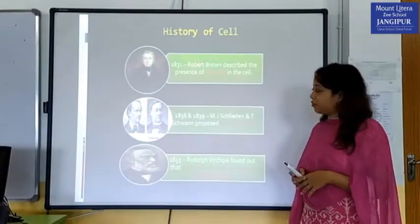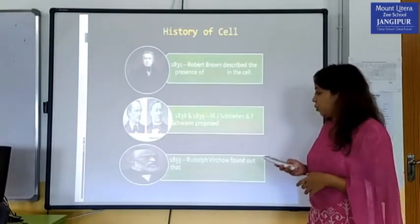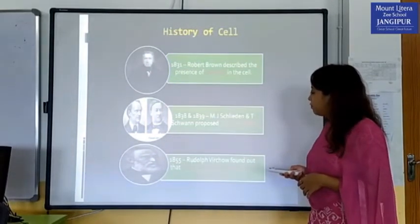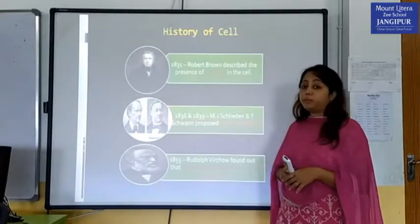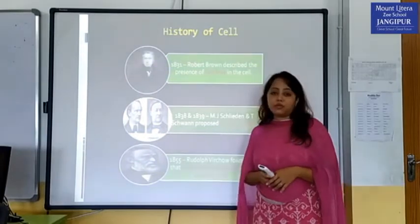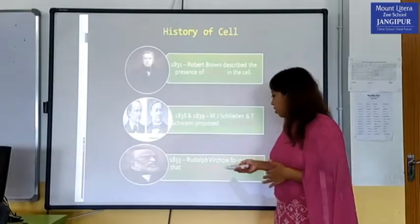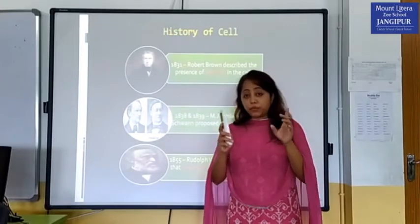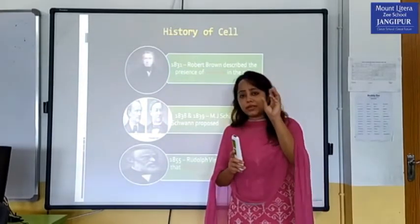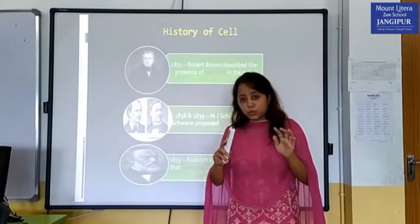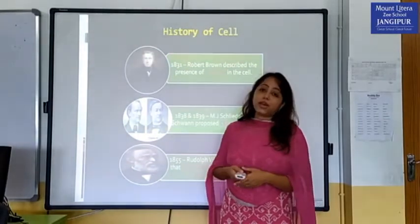They proposed the very important cell theory, which gave a great revelation to the world. And in 1855, Rudolf Virchow, also from Germany, found out that new cells develop from pre-existing cells. That means one cell divides into two, two to four, four to eight, and so on.